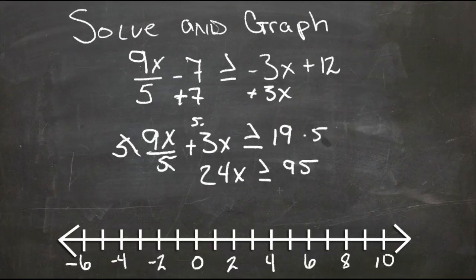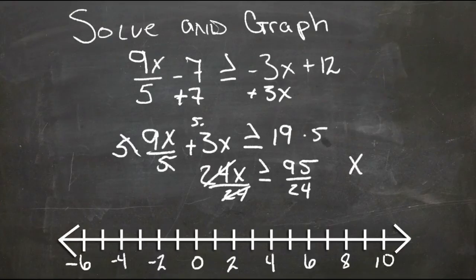And then we'll divide both sides by 24, canceling the 24s, which gives us x is greater than or equal to 95 24ths.